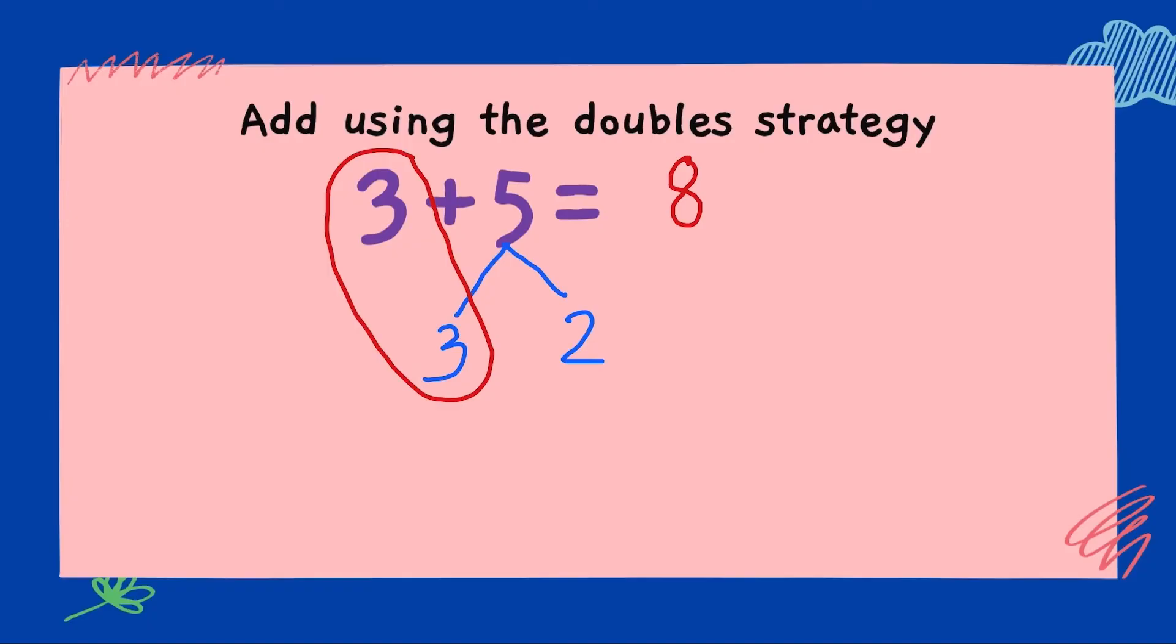We split the 5 to a 3 and a 2. And then, using the double strategy, we know that double 3 is 6. We have a 2 left over. Add them together. 6 plus 2 gives you 8.